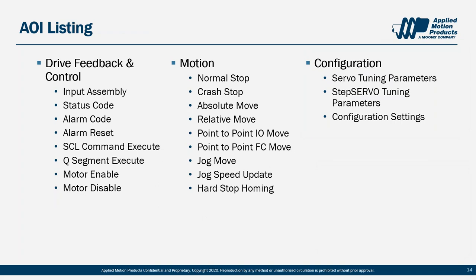Broadly speaking, our 20 AOIs are divided into three categories: drive feedback and control, motion, and configuration. In the first category, all information from the implicit input assembly is easily readable and pre-mapped into tags for use elsewhere in your code — plus the ability to execute queue segments, SCL commands, and non-motion tasks like enable and disable. In the motion category, we've included the ability to kick off many simple and complex move types using a single bit trigger. The configuration category — the advanced group — lets you change motor parameters including sending new tuning parameters for our closed-loop products. These are generally only used when it's undesirable to use Applied Motion's configuration software.